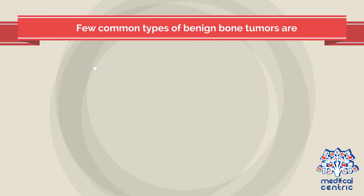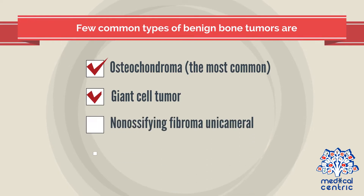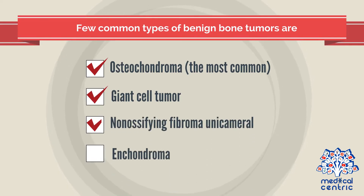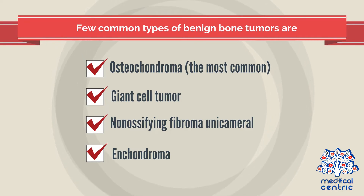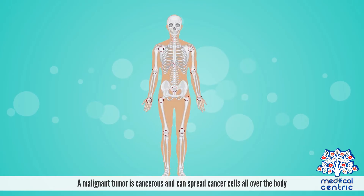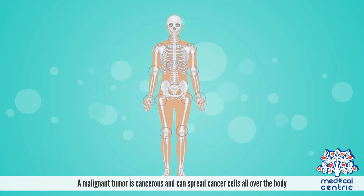A few common types of benign bone tumors are osteochondroma, the most common, giant cell tumor, non-ossifying fibroma unicameral, and enchondroma. A malignant tumor is cancerous and can spread cancer cells all over the body.